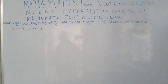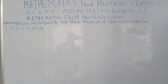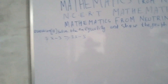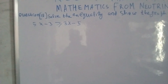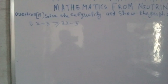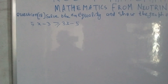Your question is: solve the inequality and graph the solution on the number line. So the inequality is 5x minus 3 is greater than or equal to 3x minus 5. We have to solve this inequality.